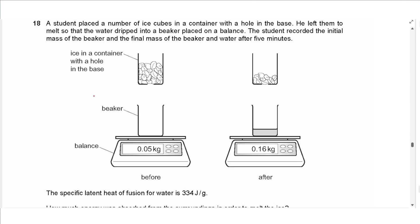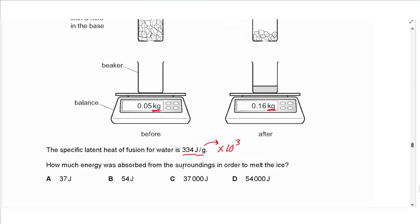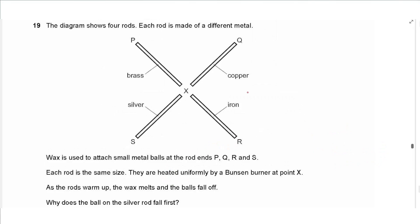Question 18 is about latent heat, which is removed from the new syllabus — you can skip this. A student places ice cubes in a container with a hole in the base and lets them melt, dripping into a beaker on a balance. The specific latent heat of fusion of water is 334 J/g (334,000 J/kg). Using Q = mL, the mass is the difference between the two readings: (0.16 − 0.05) multiplied by 334 × 10³ gives 37,000 joules. The answer is C.